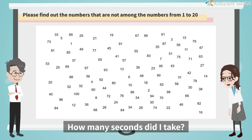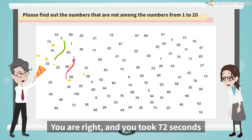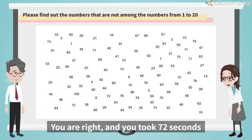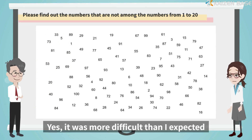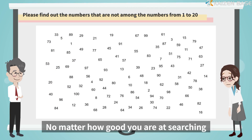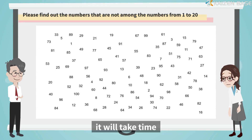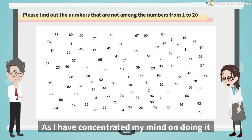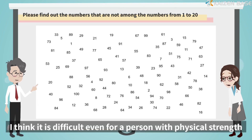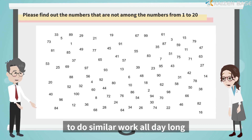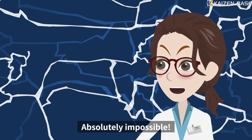How many seconds did I take? You are right, and you took 72 seconds. How was it? Was it difficult? Yes, it was more difficult than I expected. No matter how good you are at searching, it will take time. As I concentrated my mind on doing it, I used my physical strength as well. Yes, it is pretty tiring. I think it is difficult even for a person with physical strength to do similar work all day long. Absolutely impossible.